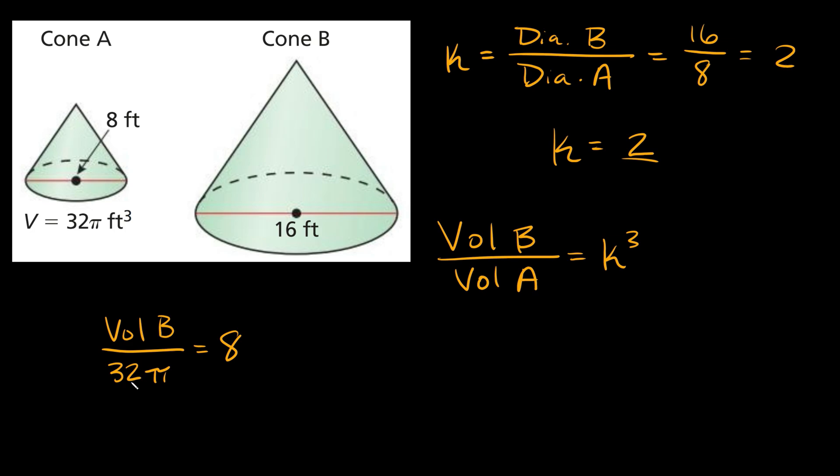Now we're trying to solve for the volume of B. So the first thing we have to do is get rid of this 32 pi. And we can do that by multiplying both sides by 32 pi. So on this side, the 32 pi's cancel each other out. And all we're left with is the volume of B is equal to 8 times 32 pi. And 8 times 32 is equal to 256.